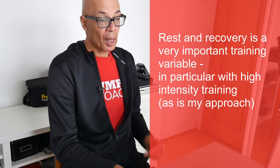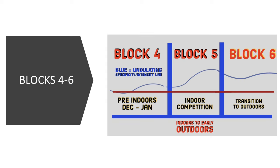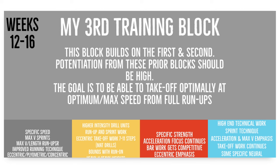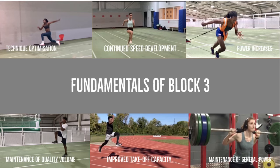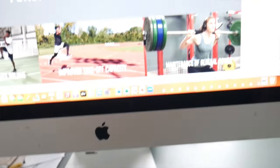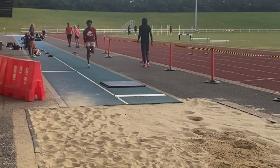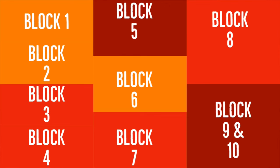Here's an overview of my first six blocks, showing roughly what I'm trying to achieve. The fundamentals reflect my entire methodology — the qualitative method that Winkler, Everly, and Pfaff pointed to. We're trying to optimise technique, continuously develop speed, increase power, maintain quality volume, improve take-off capacity, and maintain general power — so we're never too far behind the starting line, even in block 3 around December. Always progressing the key elements of long jump, triple jump, and sprint training that matter.